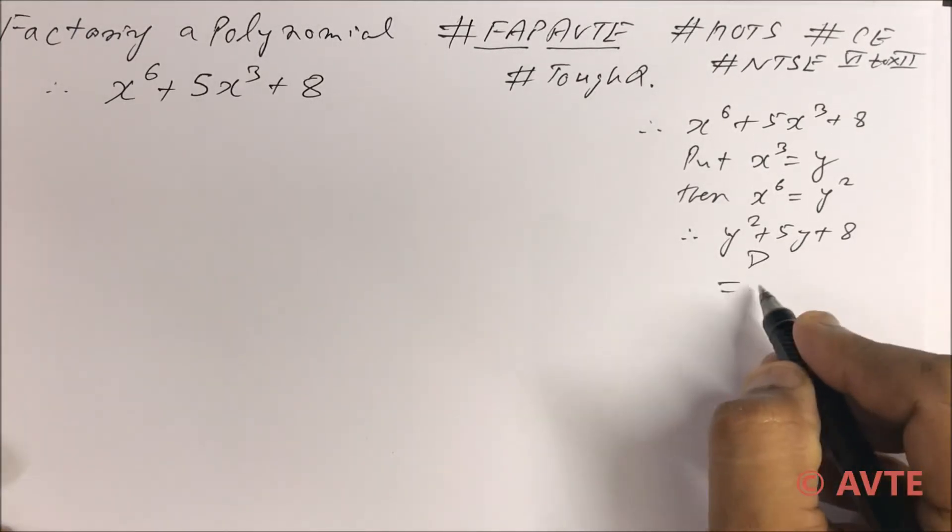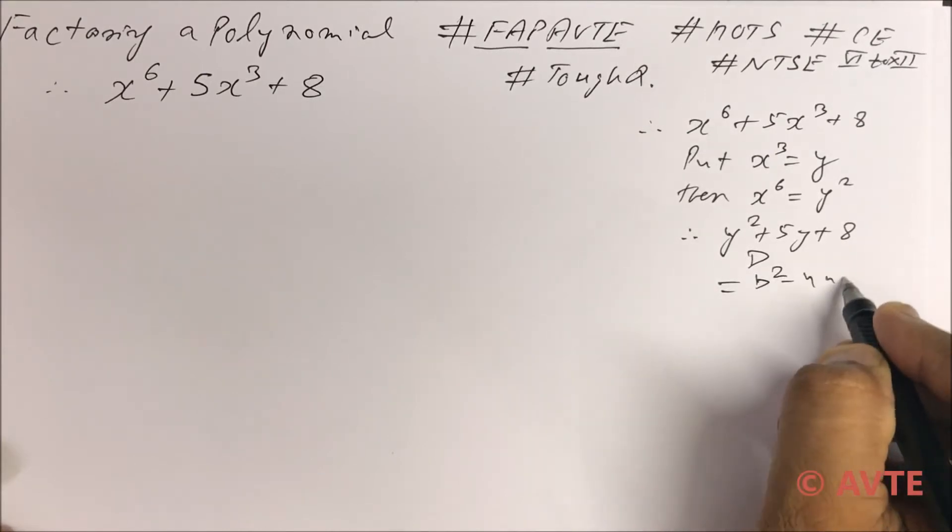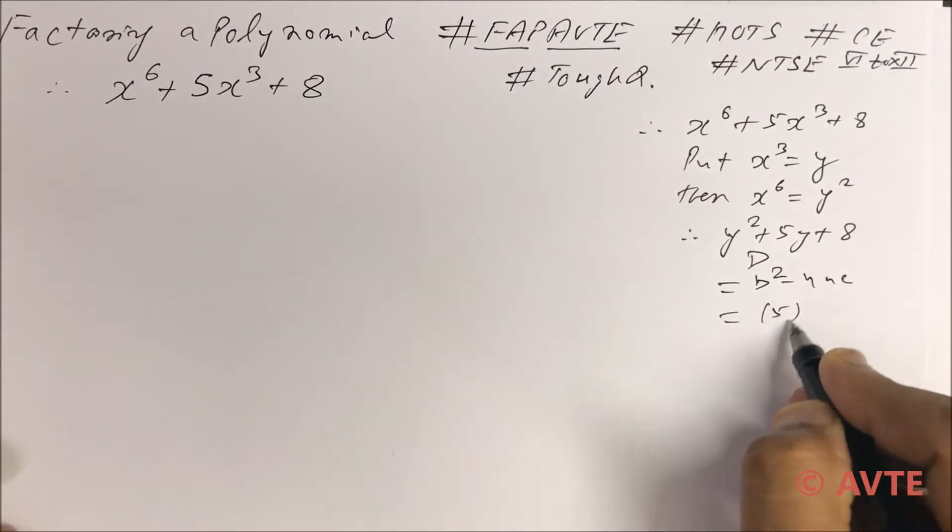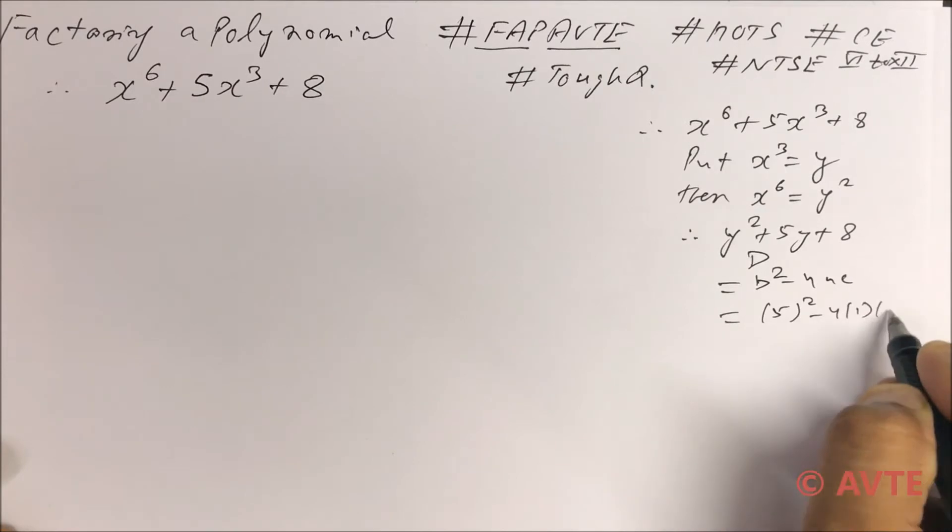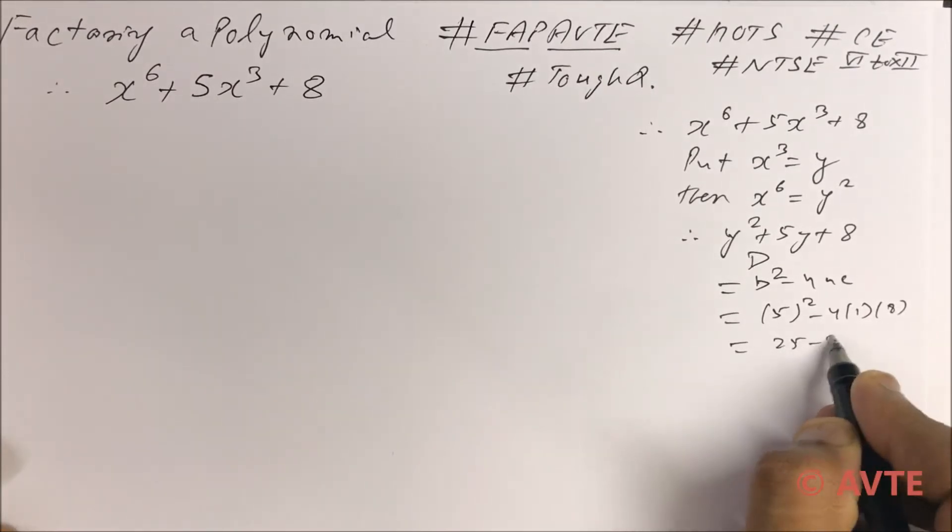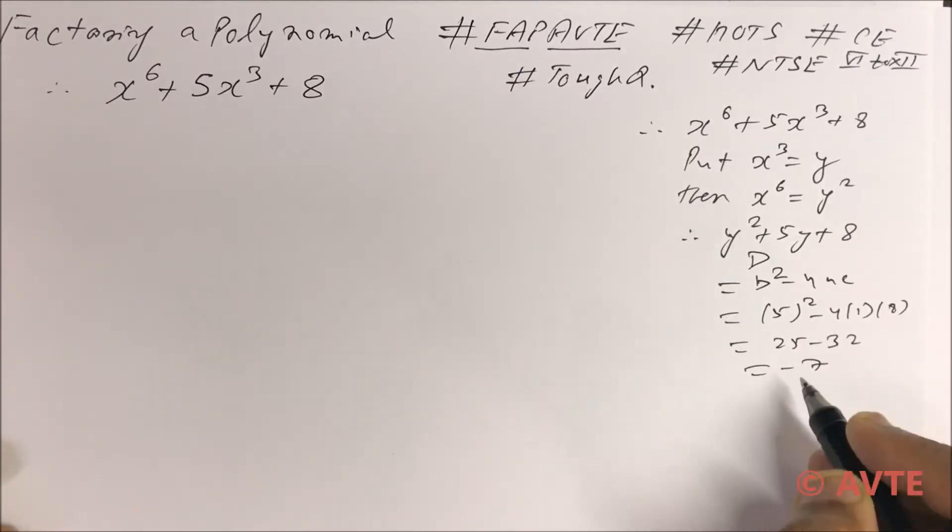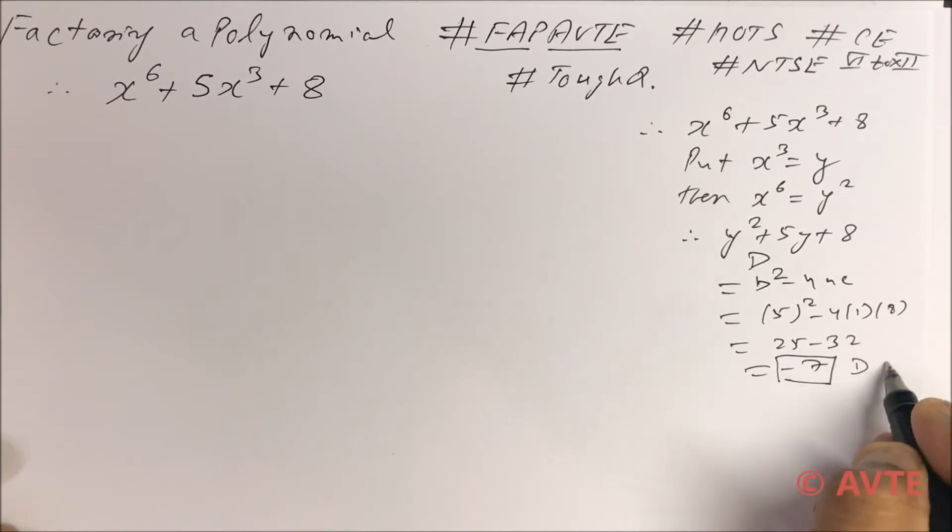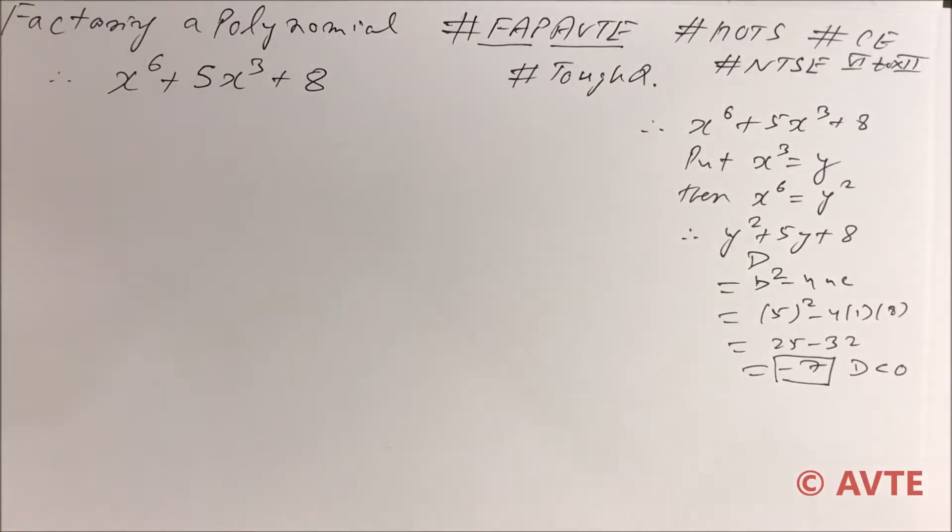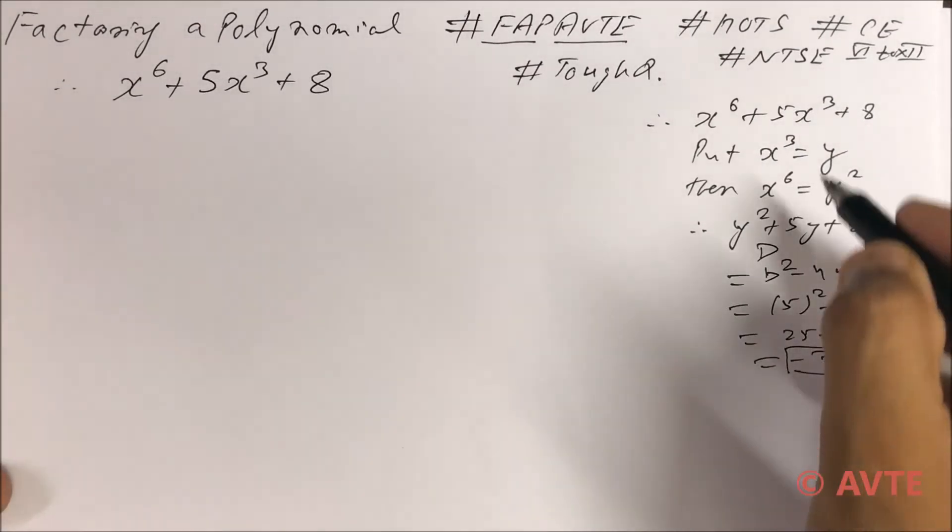Let's see, if we find the discriminant of this, b square minus 4ac, this is 5 square minus 4 into 1 into 8. It is 25 minus 32. It is minus 7. It is negative. Here, d is less than 0. So we are not supposed to factorize. So if we cannot factorize y, how can we factorize x?